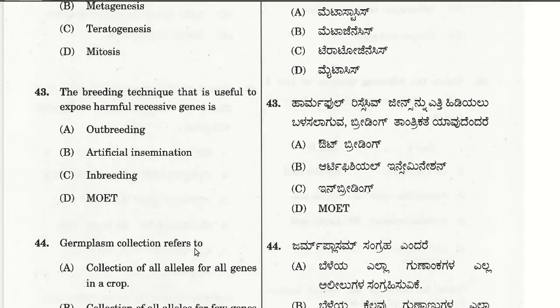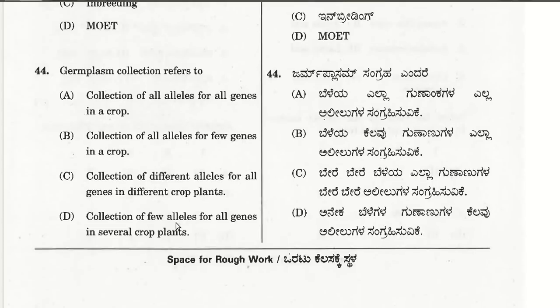The forty-third question: the breeding technique useful to expose harmful recessive genes is inbreeding. The forty-fourth question: germplasm collection refers to collection of all alleles for all genes in a crop. So A is the right choice — germplasm collection refers to collection of all elements for all genes in a crop.